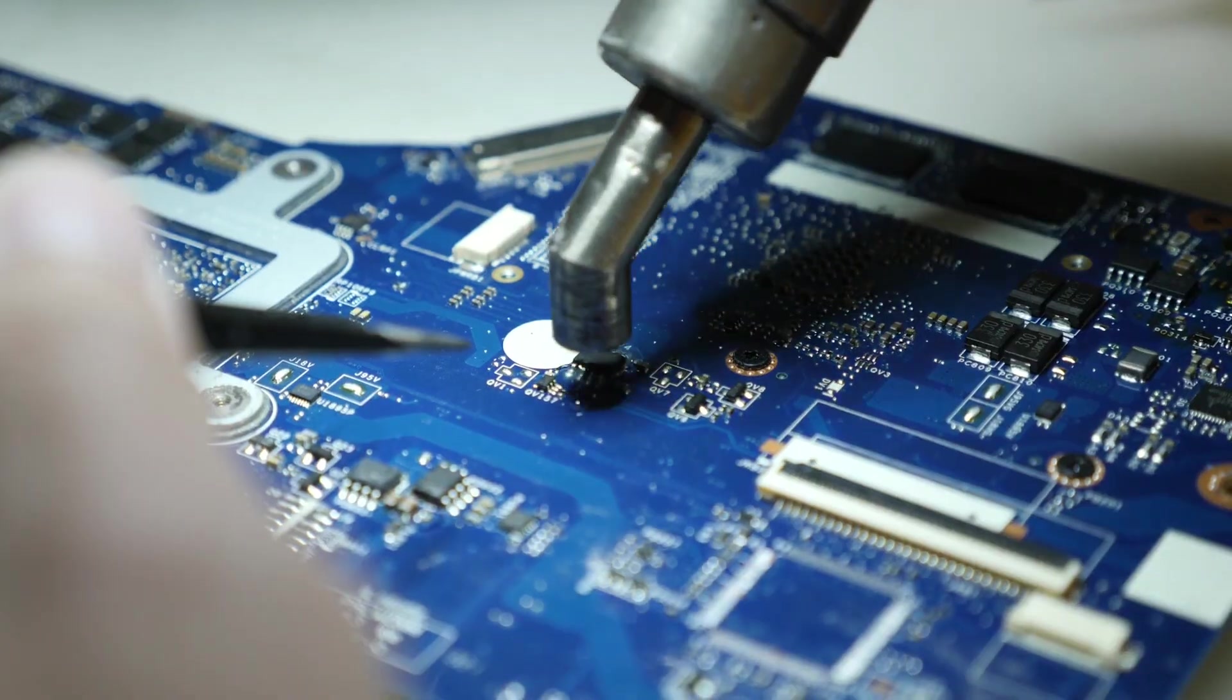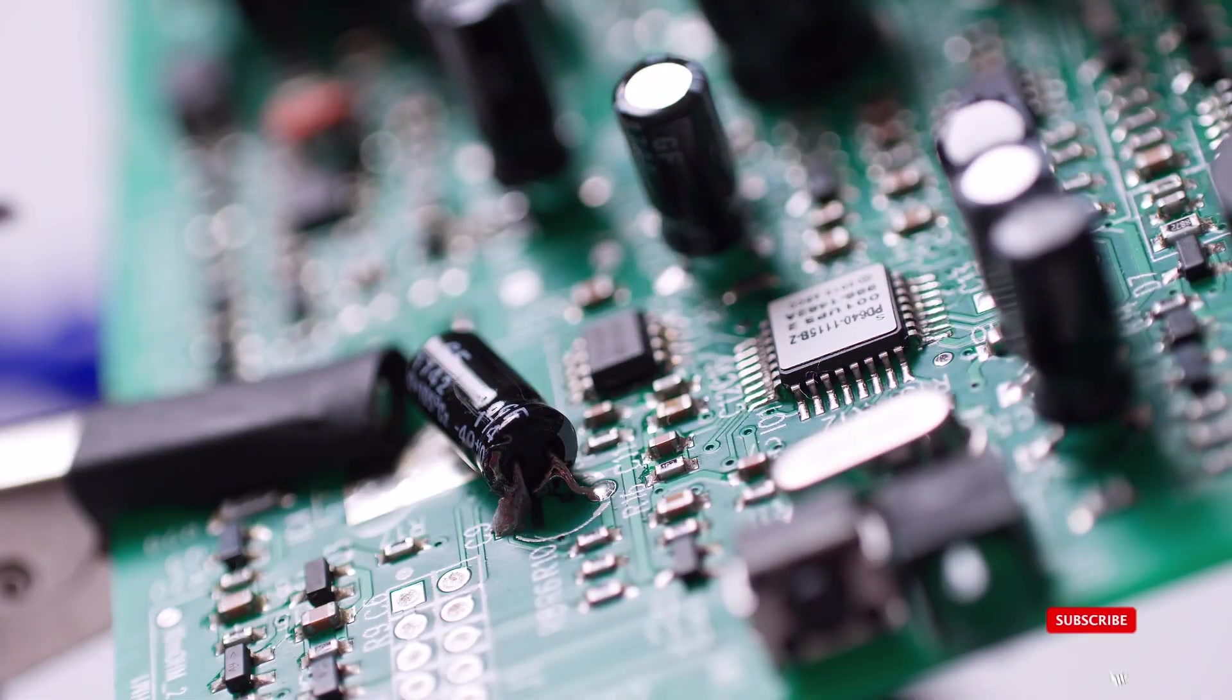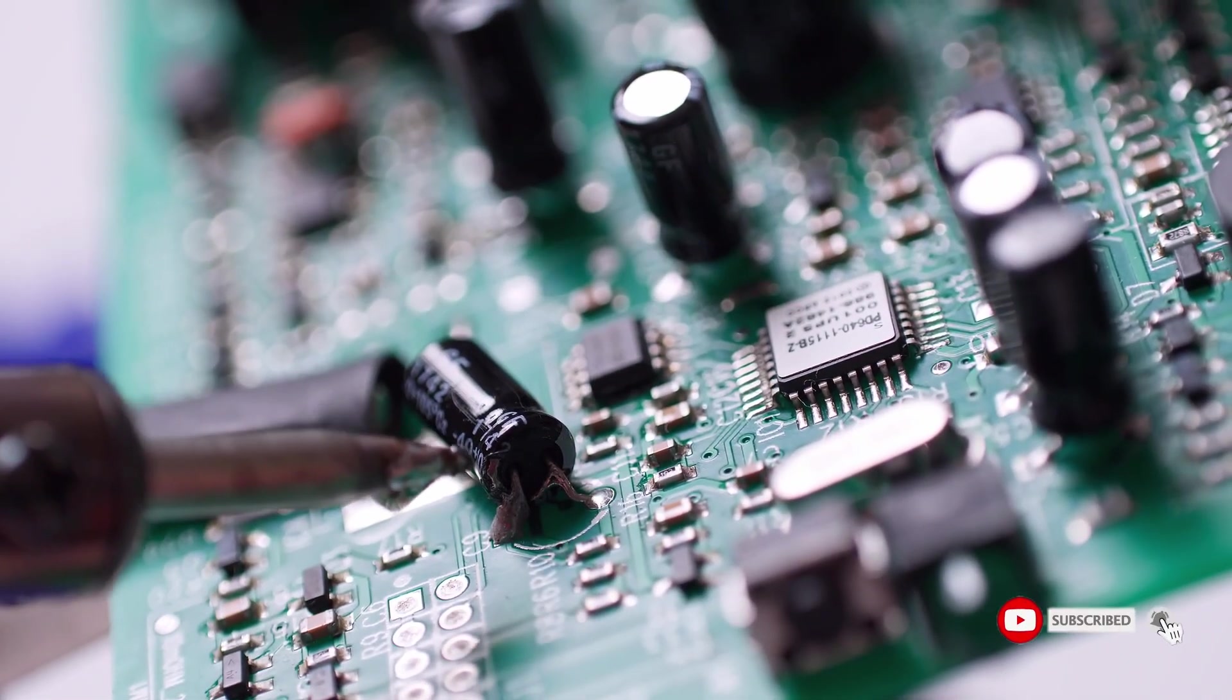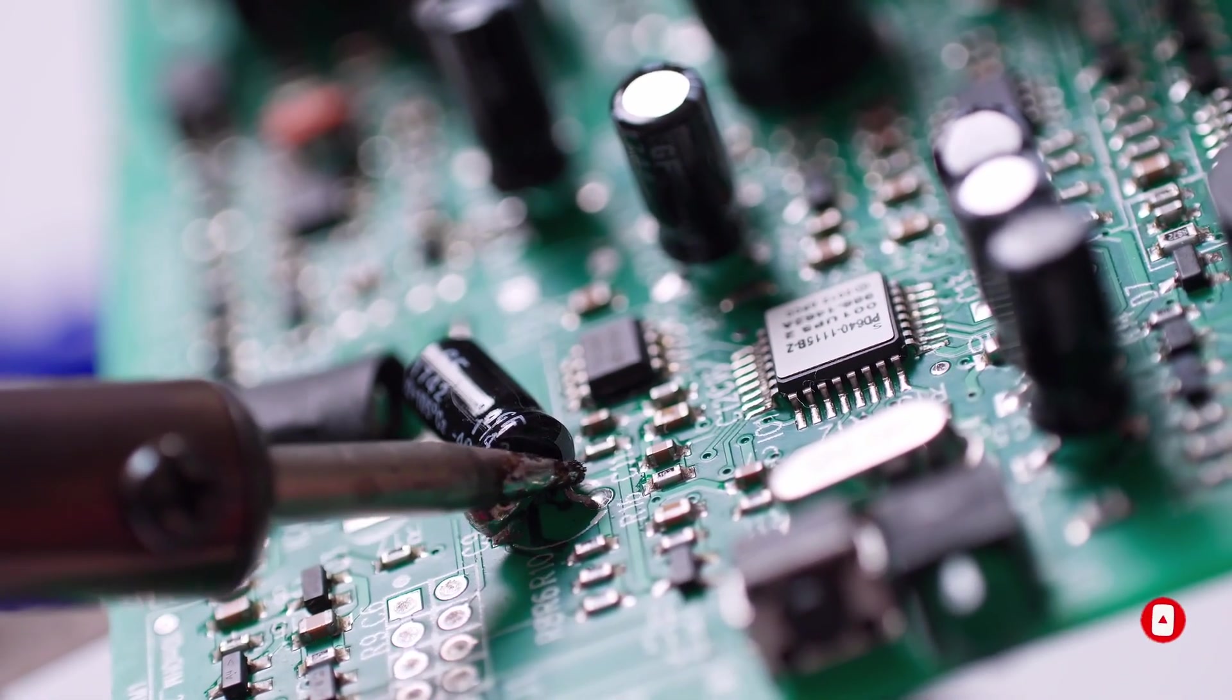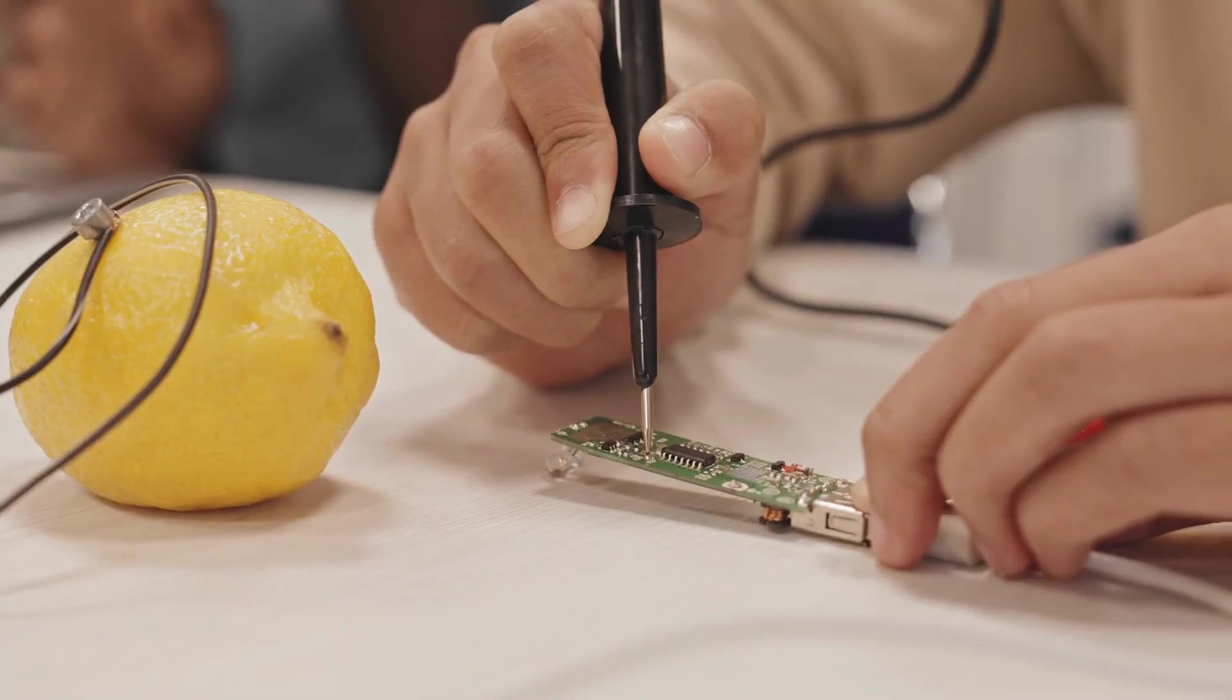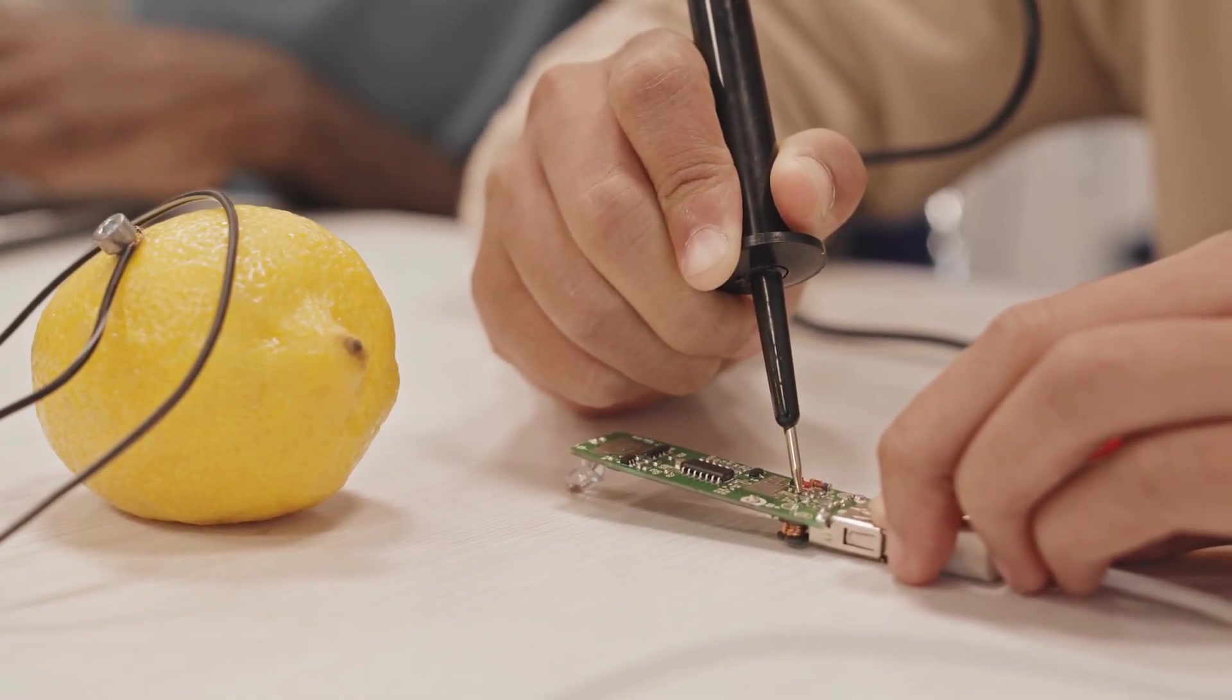Also included are iron stand, anti-static tweezers, wire stripper, cutter, cleaning sponge, and carry case. Each tool has its place, and the compact carry case keeps it all organized, perfect for hobbyists, tech repairers, or anyone who needs a portable soldering solution.